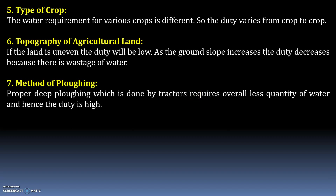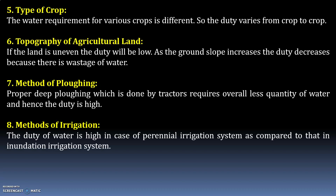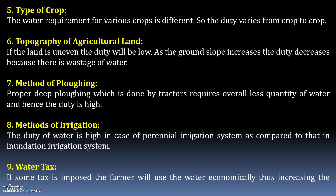Methods of cultivation: proper ploughing done by tractors requires overall less water, hence duty is high. Methods of irrigation: duty is high in case of perennial irrigation as compared to inundation irrigation. Water tax: if a tax is imposed, the farmer will use water economically, thus increasing the duty.